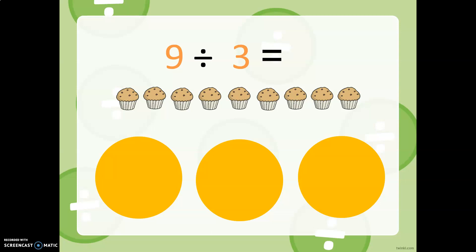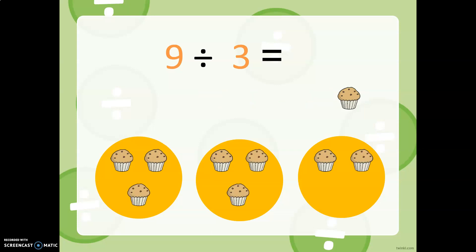So we have nine cupcakes. Nine of them. And let's say these are people, or we can even say it's a table. We want to divide, we want to share these cupcakes evenly between these three tables. So we are going to give each table one, and then each table two, and now each table has three, and there's no more cupcakes. So nine divided by three equals what? Each table gets how many cupcakes? Three.